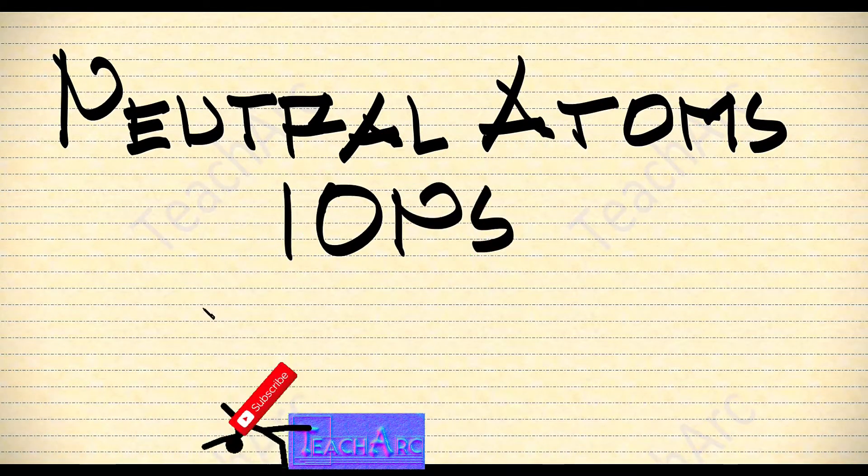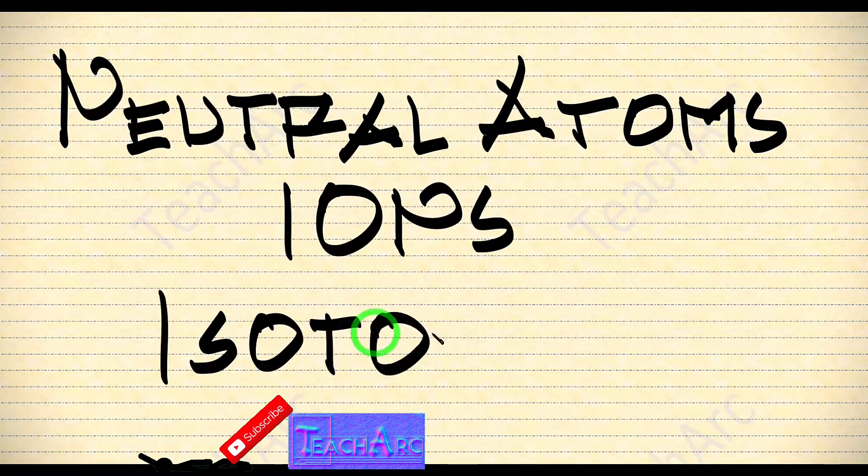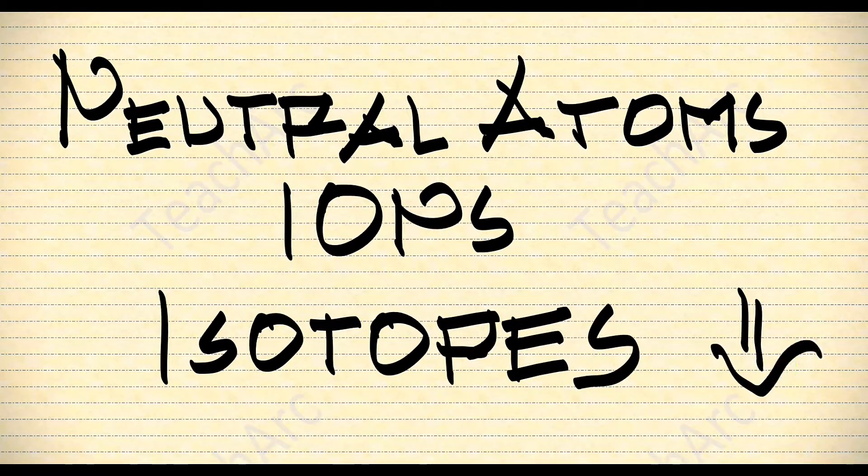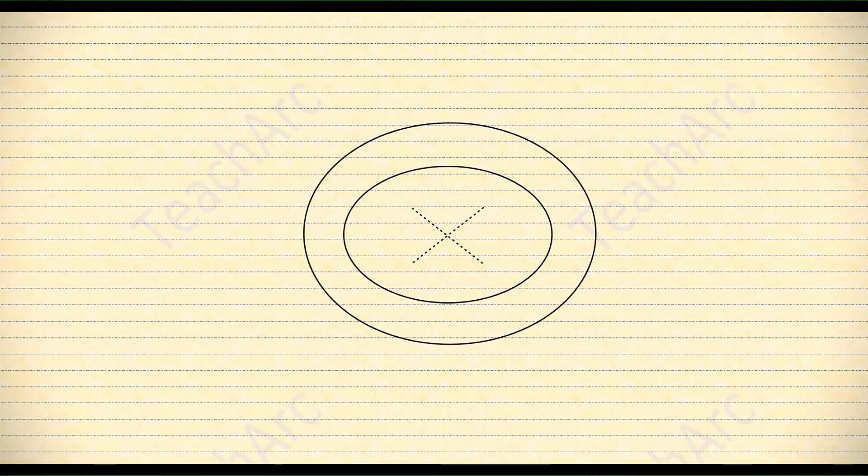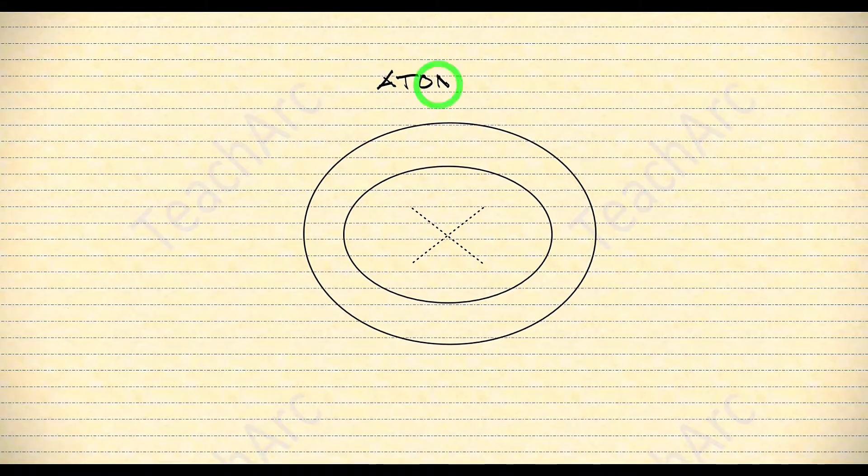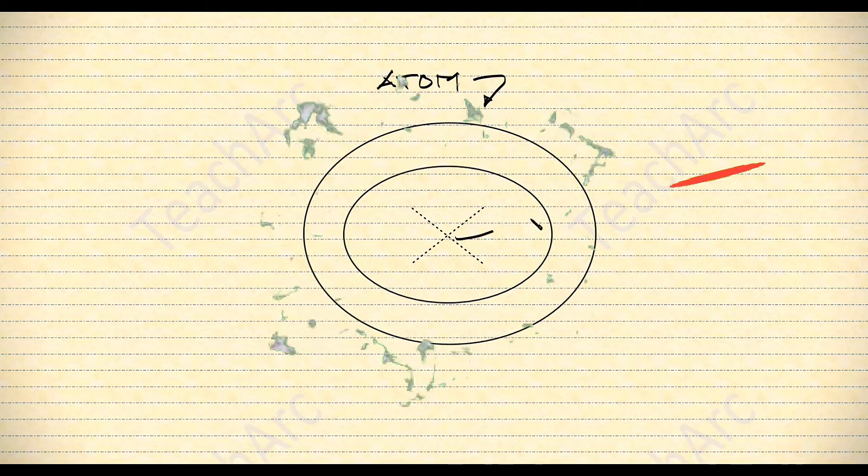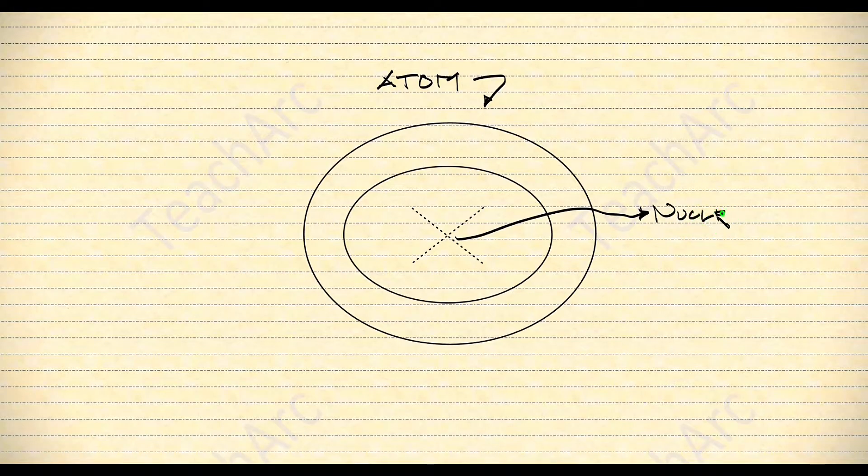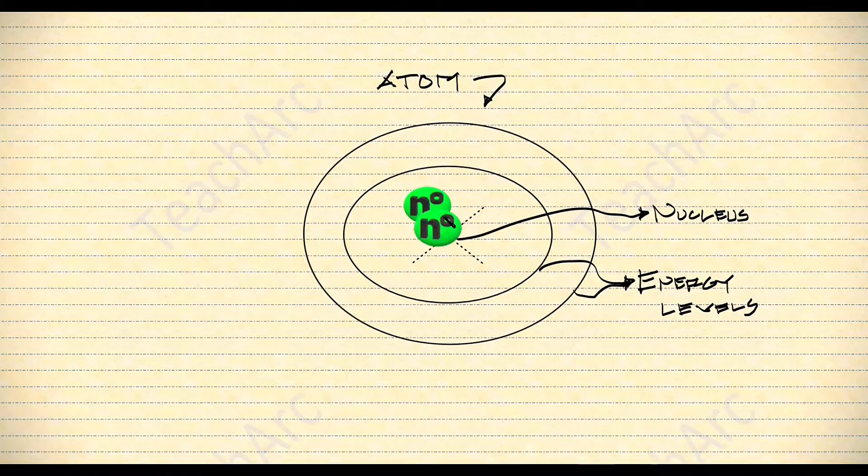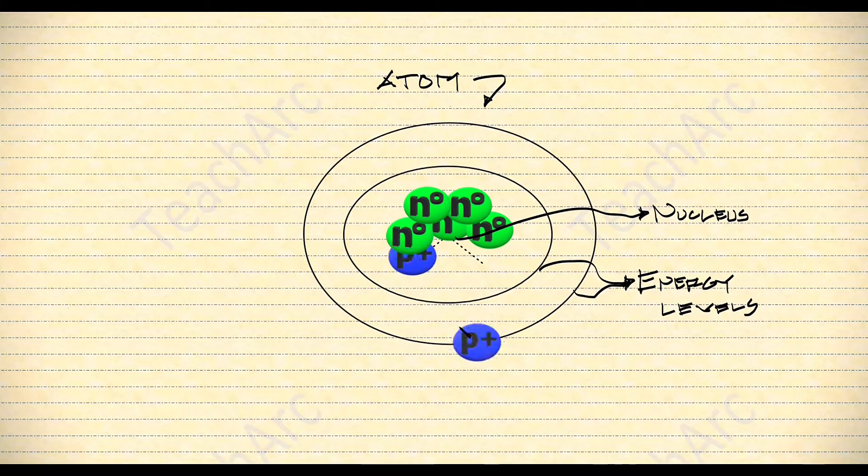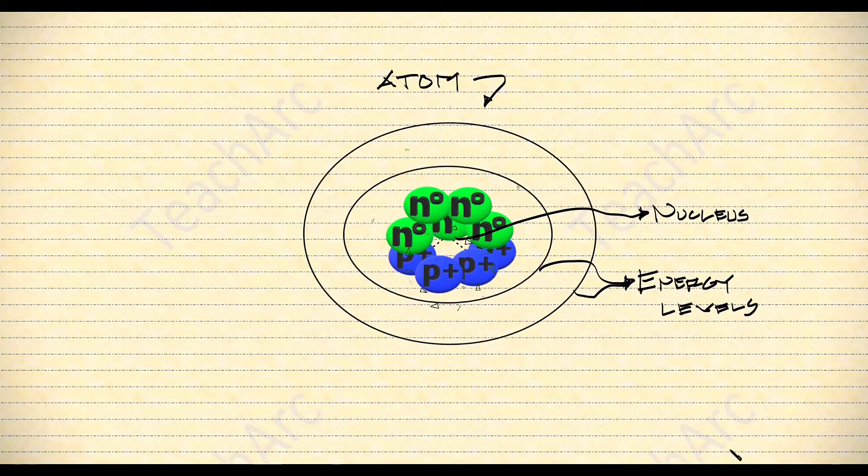Let's differentiate neutral atoms from ions and isotopes. We have here a model of an atom. The center of the atom is the nucleus, and these imaginary paths here are called energy levels. The nucleus contains neutrons and protons.